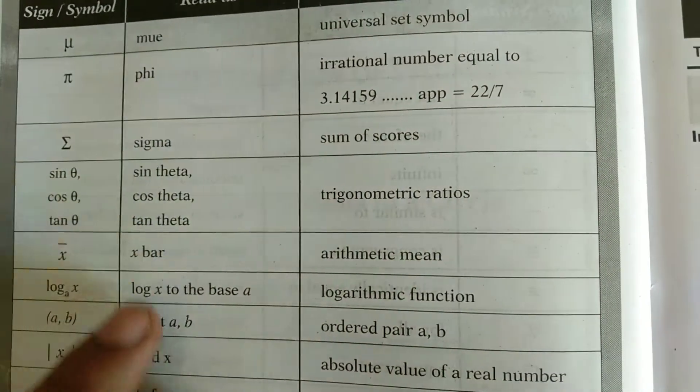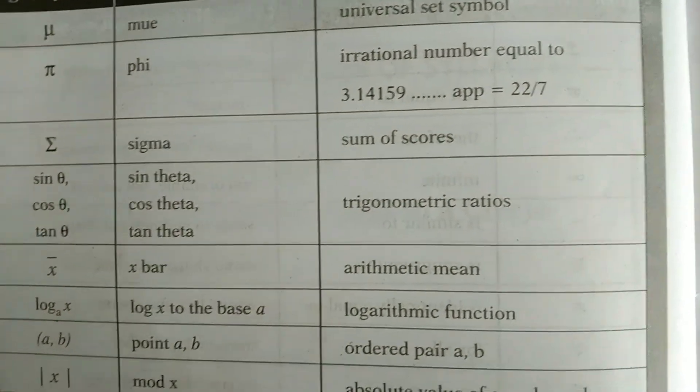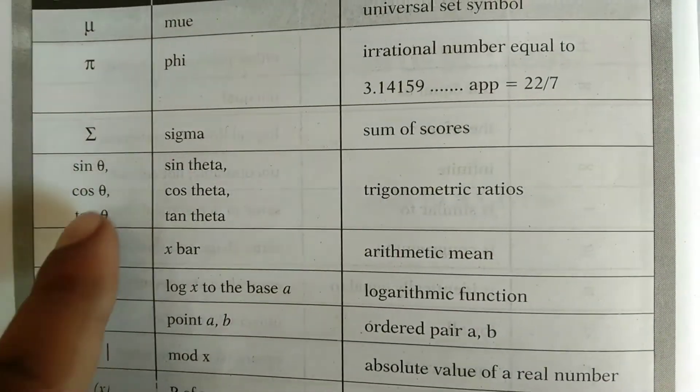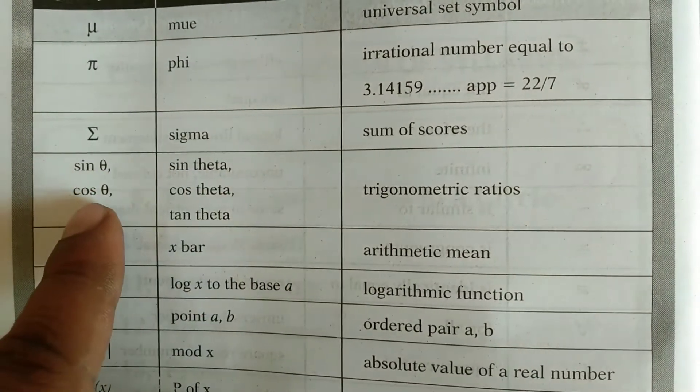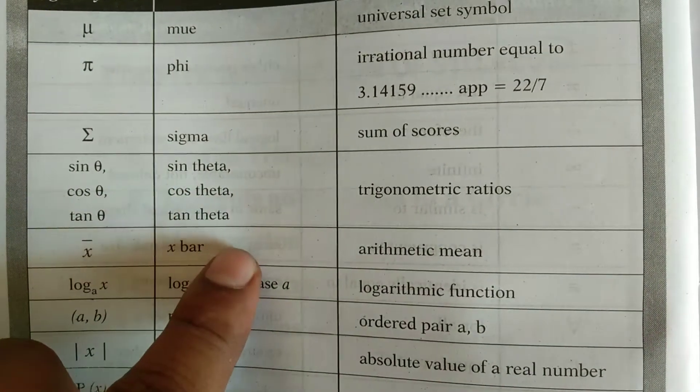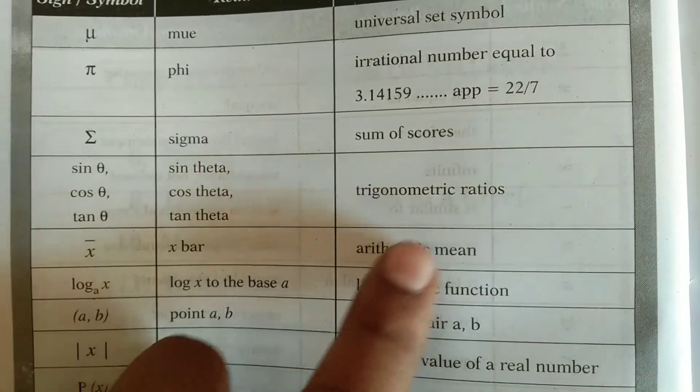And then, sigma, sum of scores. Sin theta, cos theta, tan theta, they are called trigonometric ratios.